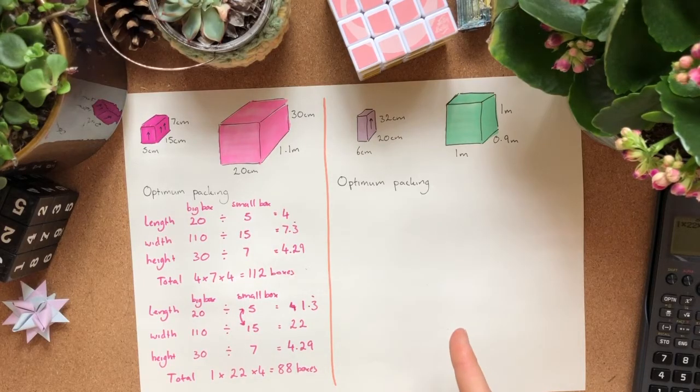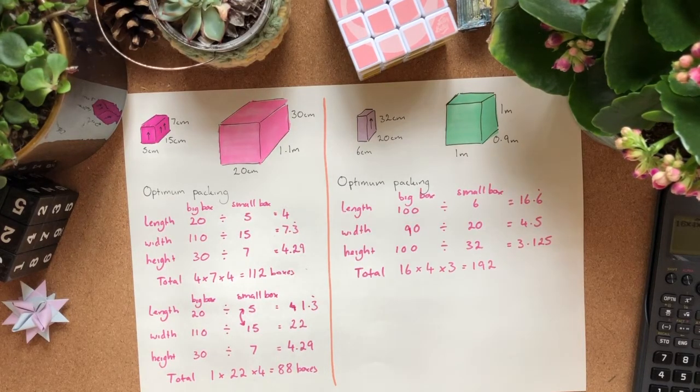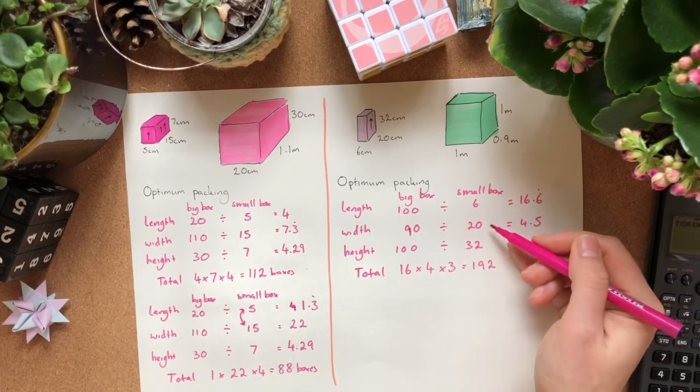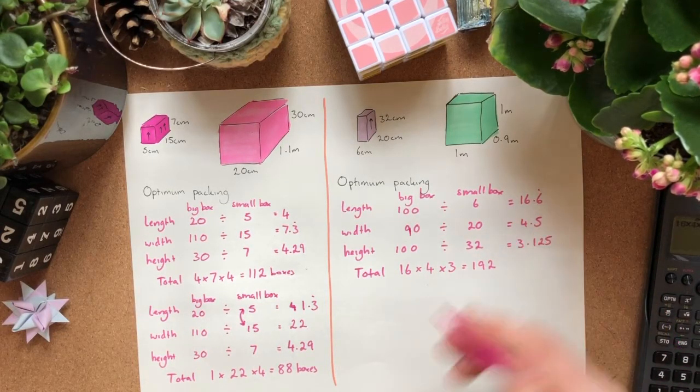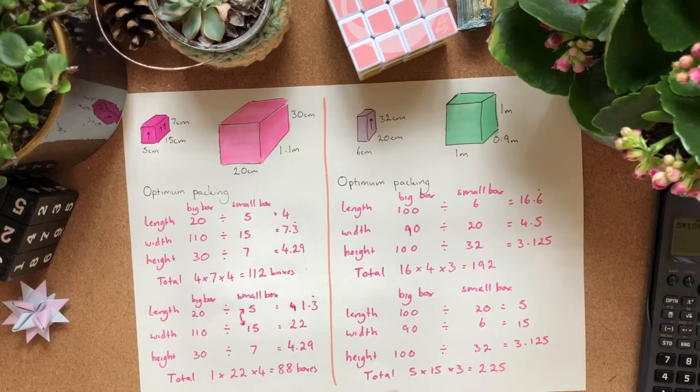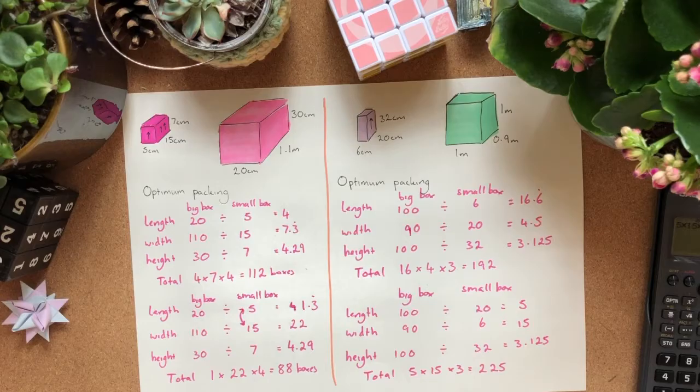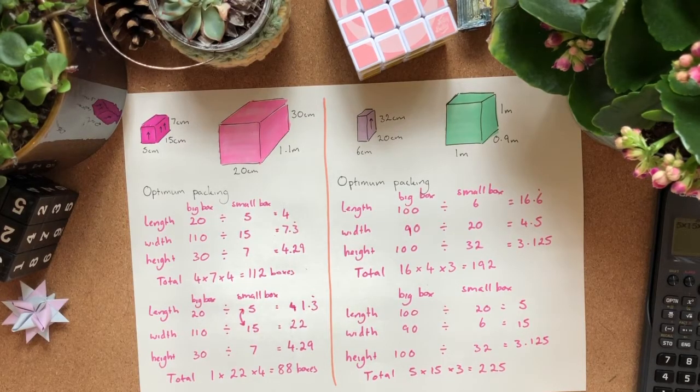Okay. Here's another practice one. First table down looks like we're getting 192 boxes. Let's actually swap the length and the width around and see if it makes a difference. Whoa. Look at that. We turned those around and now we can fit 225 boxes compared to 192. Wow. I'm so glad we did the maths.